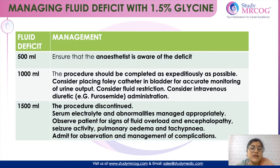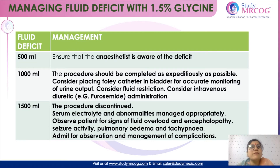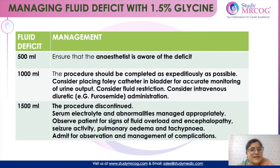Glycine is particularly used when we are using electrosurgery. While using glycine, it is very important to manage the fluid deficit. Strict input-output readings should be recorded. If there is a deficit of 500 ml, the anaesthetist should be made aware. Once the deficit reaches 1000 ml, the procedure should be completed as quickly as possible, and you should consider placing a Foley's catheter in the bladder for accurate monitoring of output.